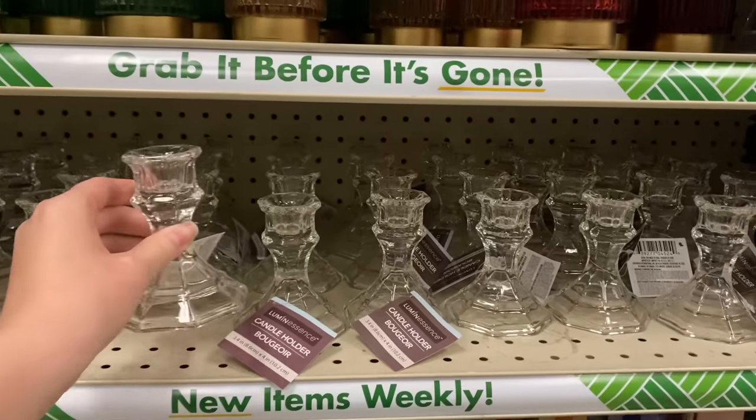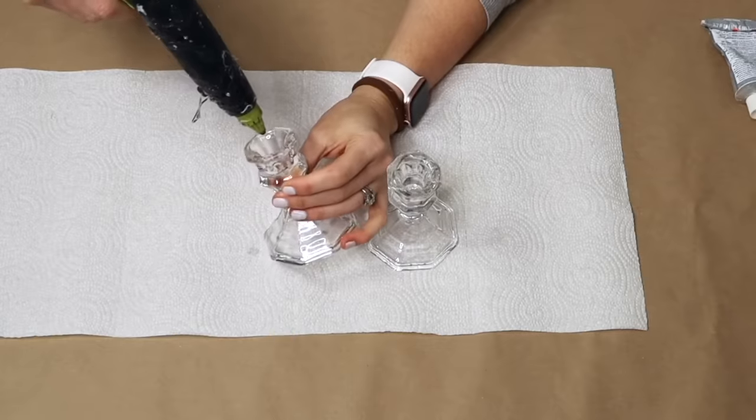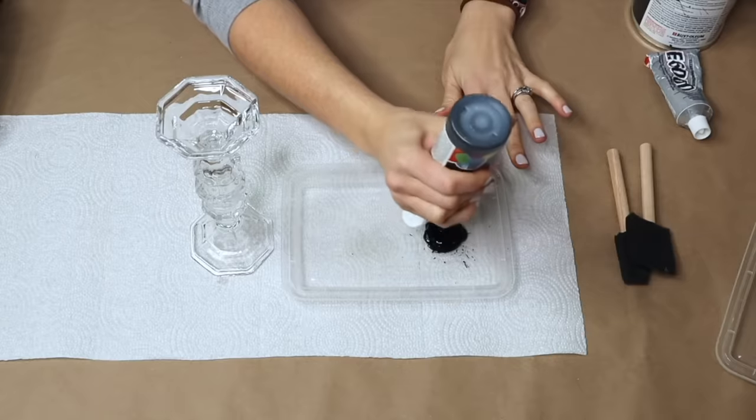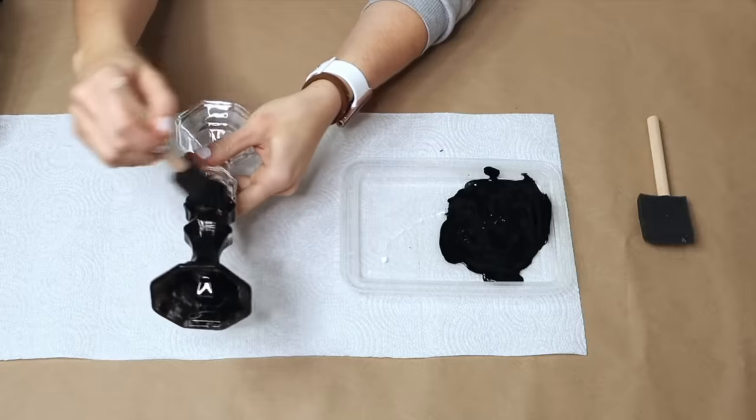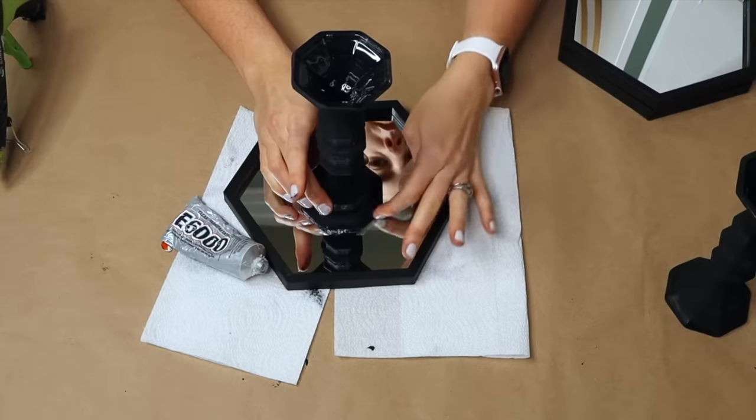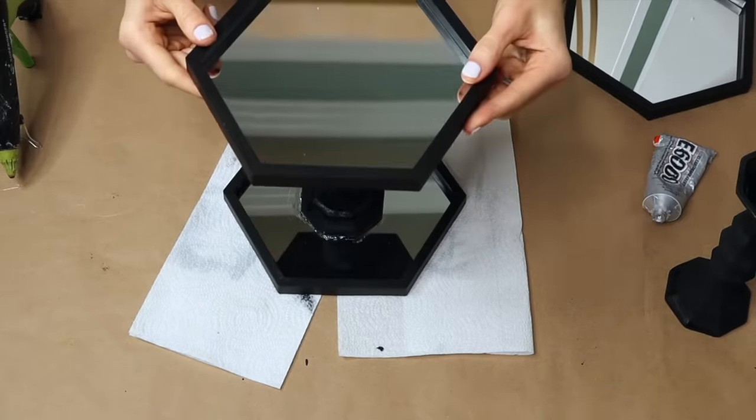I'm taking three hexagon decorative mirrors and four small glass candlesticks from Dollar Tree. Stack two candlesticks on top of one another. When the glue has dried, take some black acrylic craft paint. Apply the paint all over each candlestick column. Once that column is attached to the base mirror, add glue to the top of the column before stacking another mirror on top of it in the center.